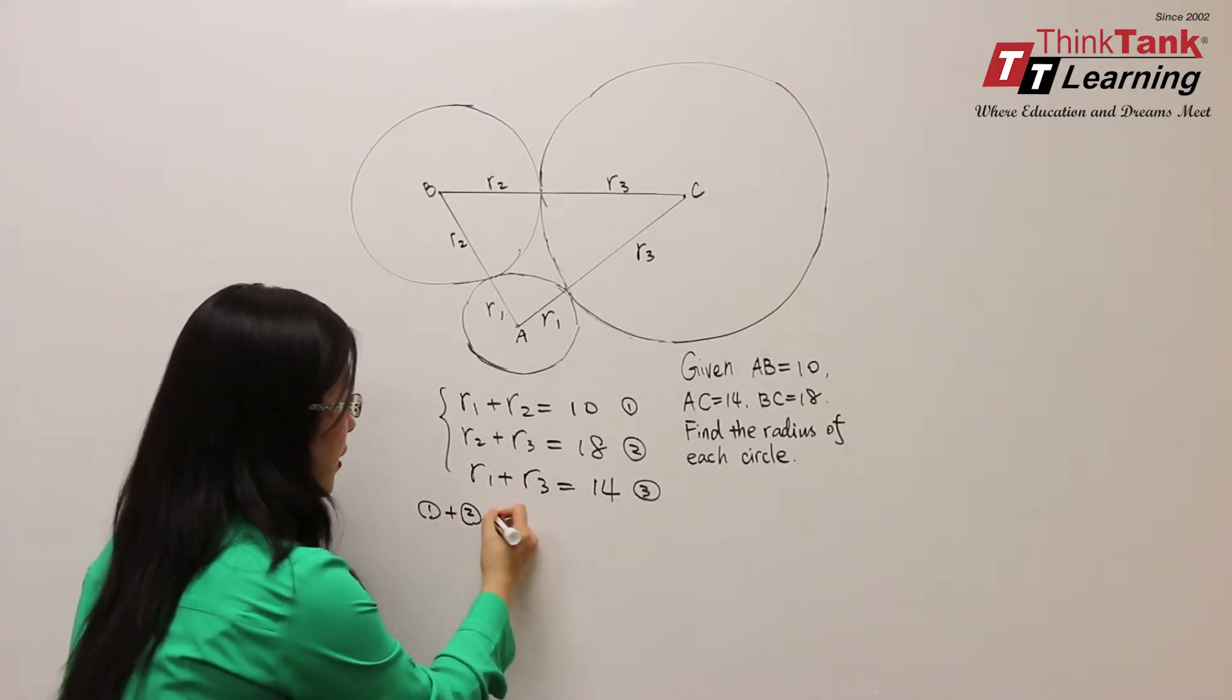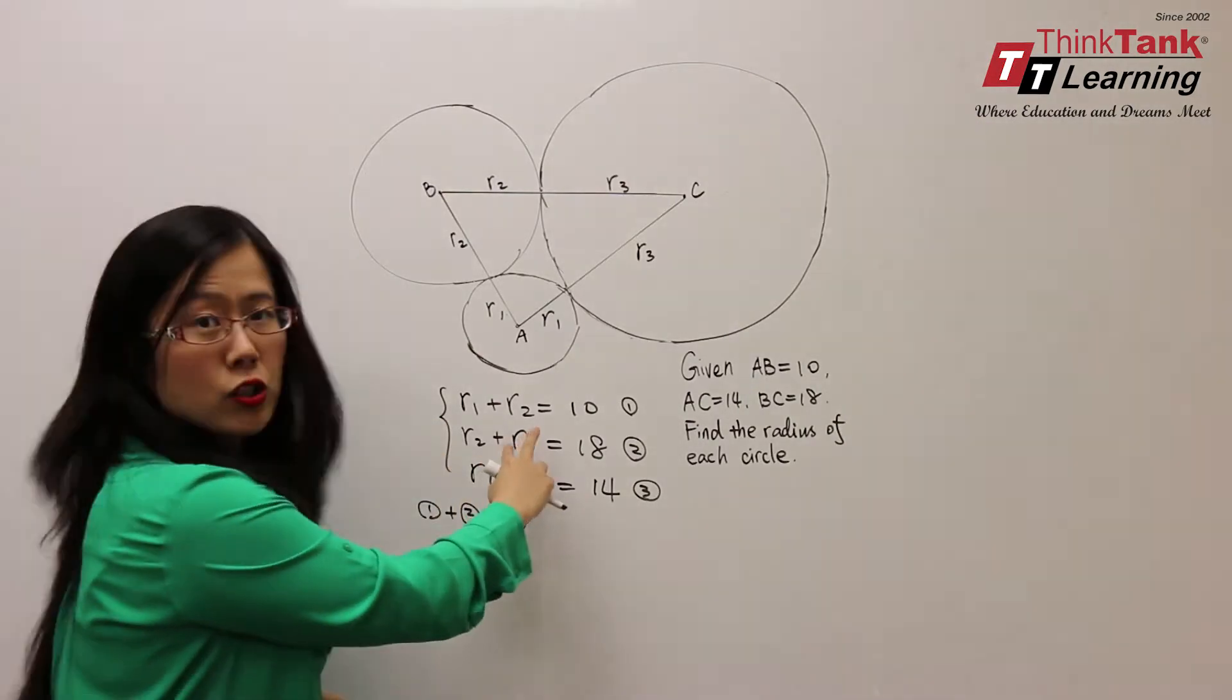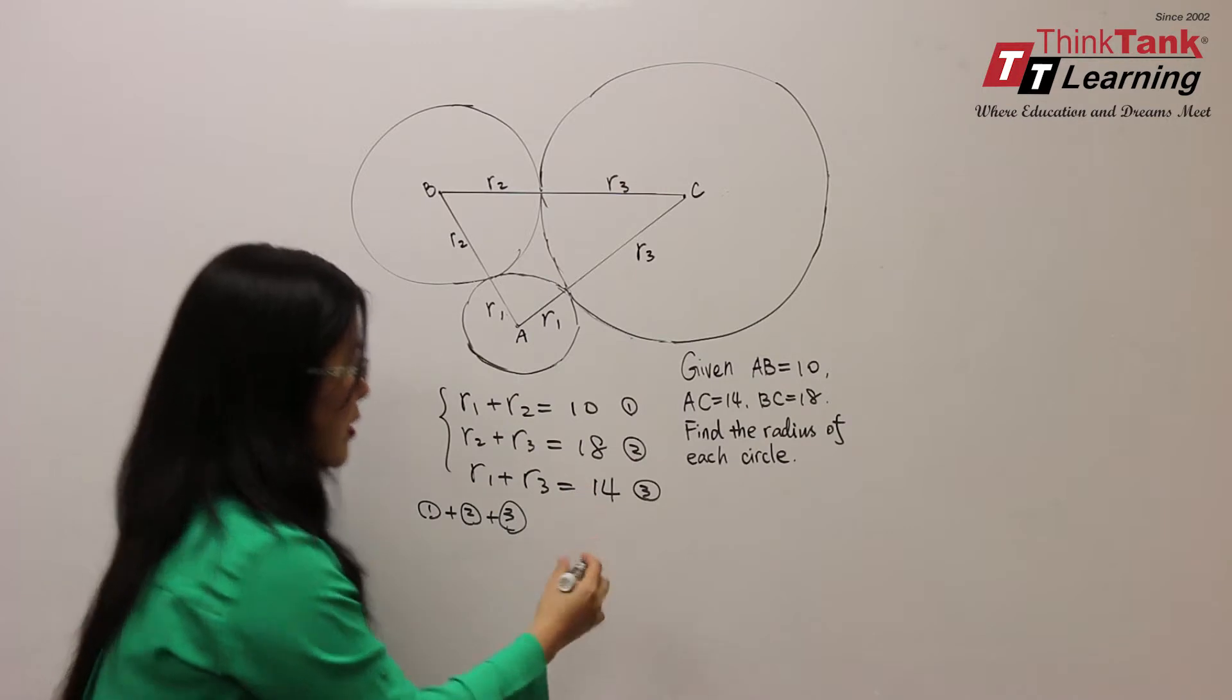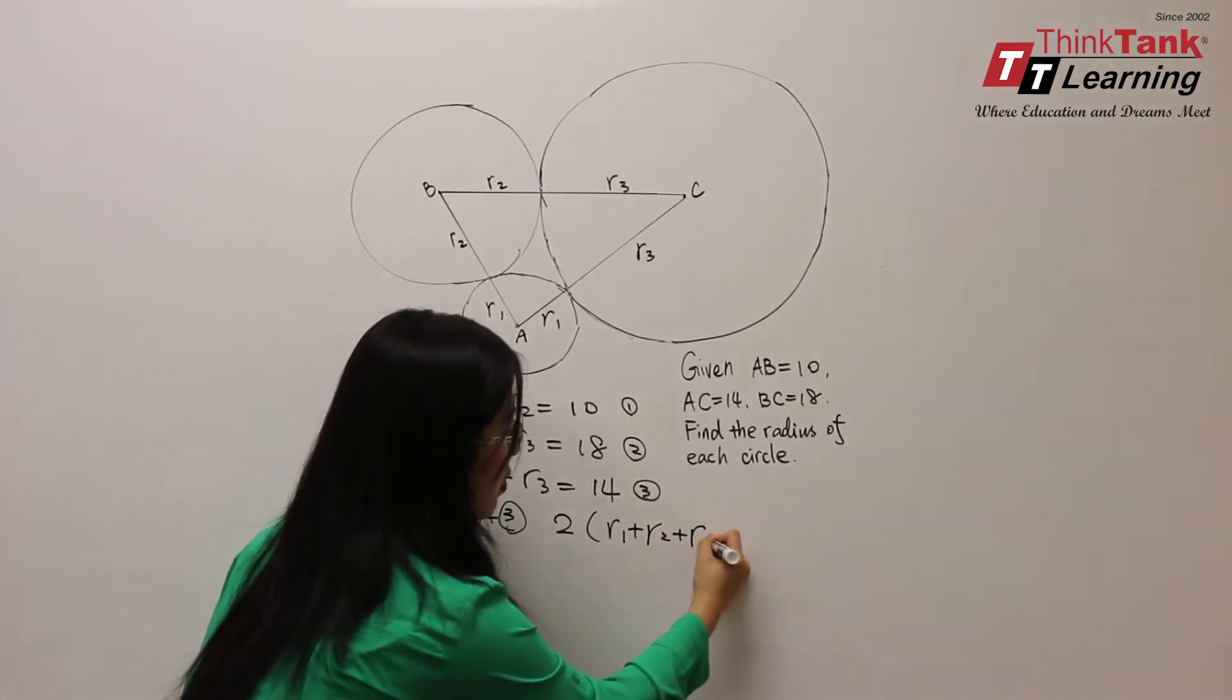So 1 plus 2 plus 3, we will have two R1s, two R2s, and two R3s. So I'll have 2(R1 plus R2 plus R3),